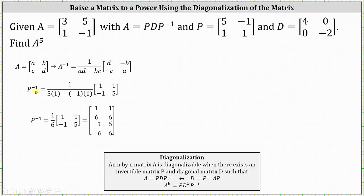The inverse of matrix P is equal to one divided by the quantity five times one minus negative one times one, times the matrix with entries one, one, negative one, five. The entries along the main diagonal swap positions: the five in row one, column one moves to row two, column two, and the one in row two, column two moves to row one, column one. Then we change the sign of the element in row one, column two, and the element in row two, column one.